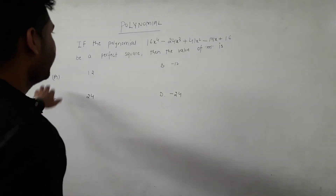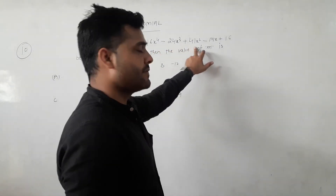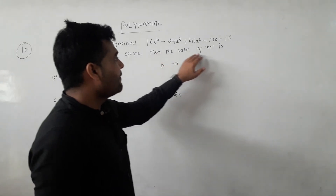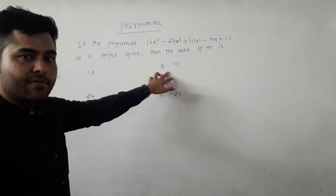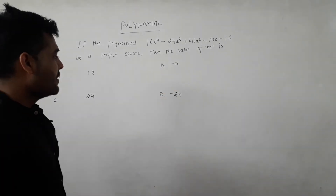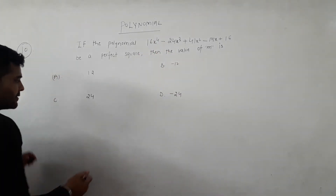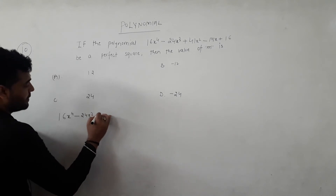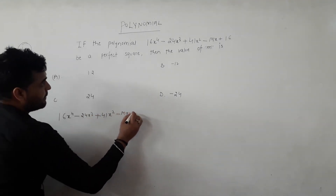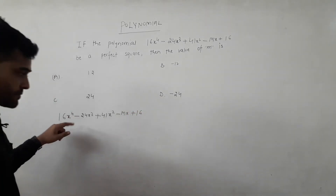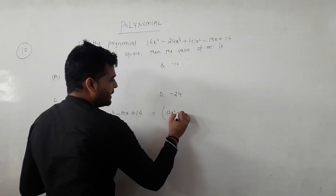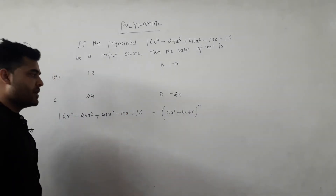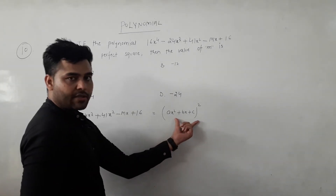Next question: if the polynomial 16x⁴ minus 24x³ plus 41x² minus Mx plus 16 is a perfect square, then the value of M is: 12, minus 12, 24, or minus 24. For it to be a perfect square, we assume it equals (ax² plus bx plus c)² and expand this identity to compare coefficients.